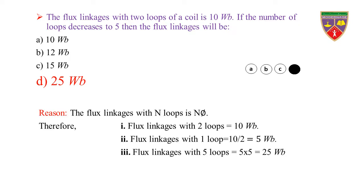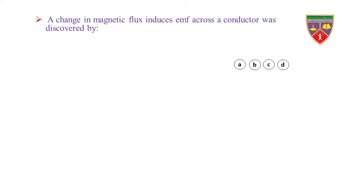Reason: The flux linkages with N loops is N × Φ, where Φ is the flux. Flux linkages with two loops = 10 Wb. Flux per one loop = 10 ÷ 2 = 5 Wb. Flux linkages with five loops = 5 × 5 = 25 Wb. Hence, flux linkages with five loops is 25 Wb.